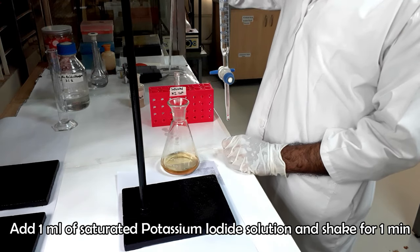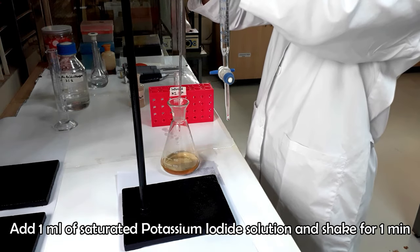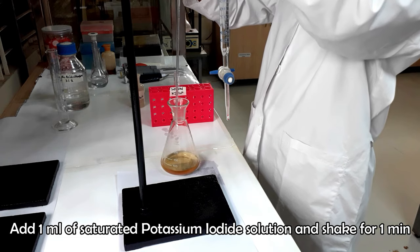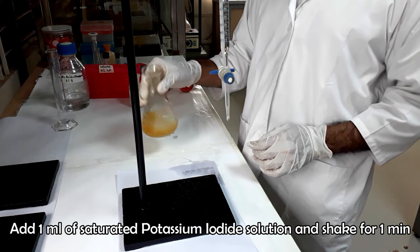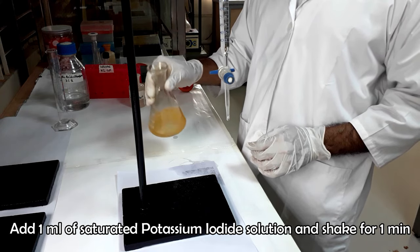Now, add 1 ml saturated potassium iodide in the same flask. Shake and rotate the flask clockwise and anticlockwise for 1 minute to make a homogeneous mixture.